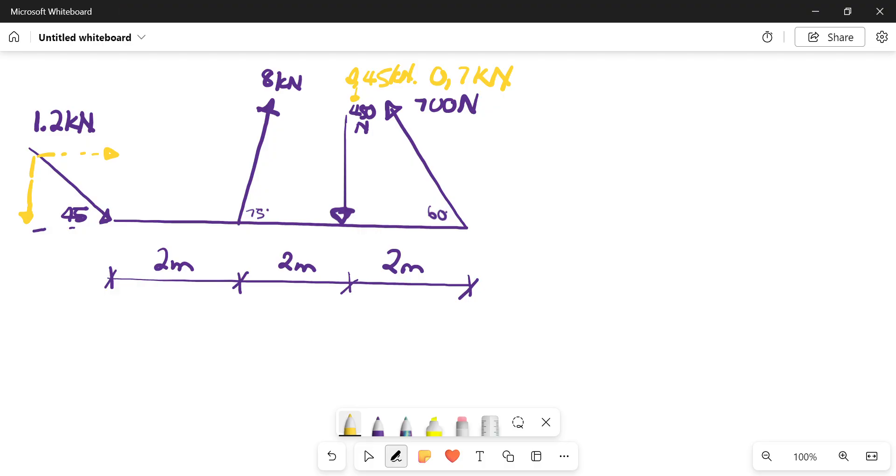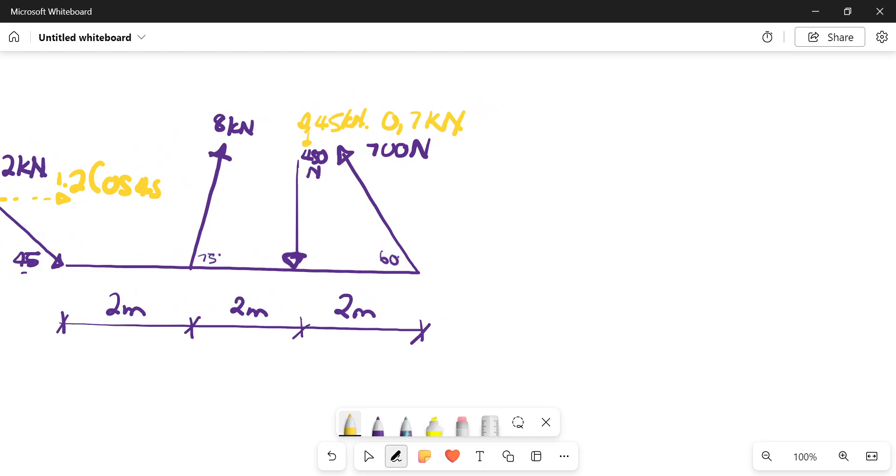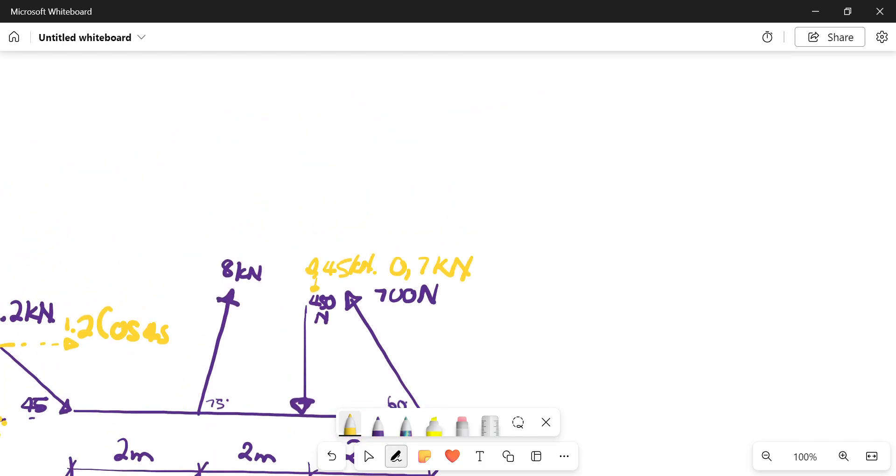By now we know how to go about calculating our components, so that will be 1.2 sin 45, 1.2 cos 45, because one is opposite and one is adjacent. On here, we have 75 degrees, so we would have 8 cos 75 on here, then this one would be 8 sin 75.